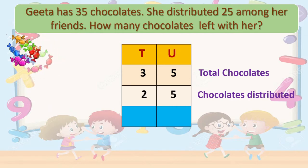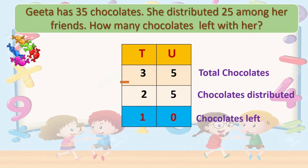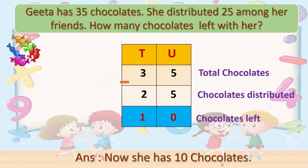Now, see there. How many remained? Only 10 remained. So 5 minus 5 is 0, and 3 minus 2 is 1, giving us 10. Here also you can see only 10 chocolates remain. So we will write chocolates left with Geeta. Our answer is she now has 10 chocolates. Out of 35, she distributed 25 among her friends, so only 10 chocolates are left with her.